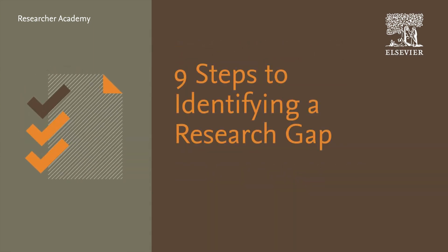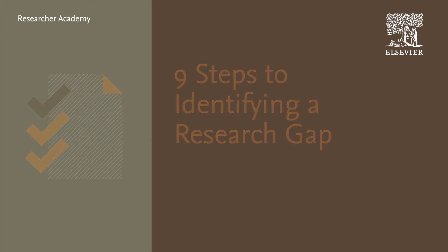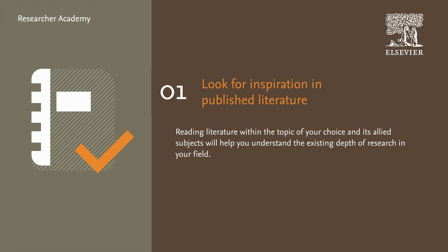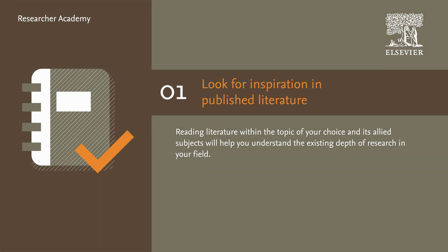So how do we go about identifying a research gap? There are nine primary steps to help you on this journey. Firstly, look for inspiration in the published literature. Read literature within the topic of your choice across a lot of subjects — this will help you understand the existing depth of research in your field and provide you with an opportunity to ask yourself questions that can lead to discovery of a research gap, which is a useful way to focus yourself on future research.